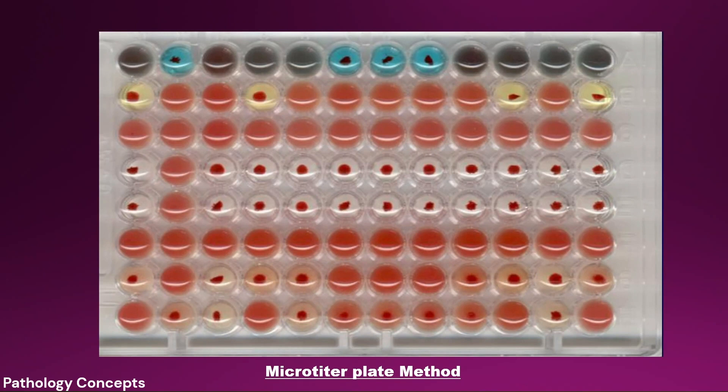Let's understand the microtiter plate method. The microtiter technology uses the automated platform to detect serum antibodies and RBC surface antigens. The reactants are centrifuged and incubated in microplates. The ABO and RH blood type is read through an automated system.